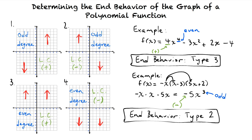In summary, in order to analyze a function for end behavior, we determine whether the degree of the function is odd or even, and we check the sign of the leading coefficient. By knowing these two things, we can know what direction the graph leads to on either side. It sounds like you are ready to master this topic.